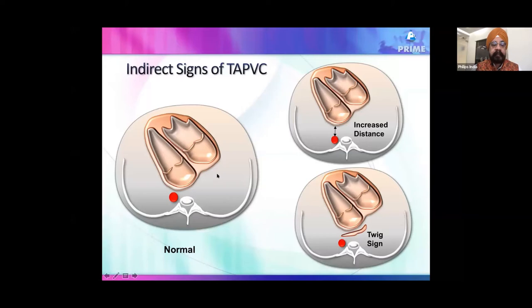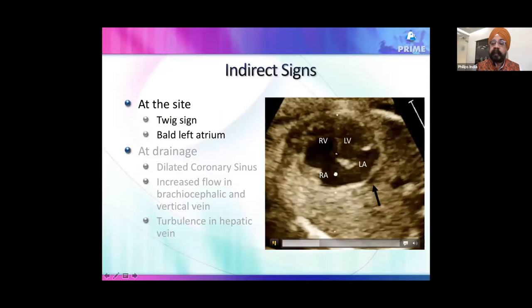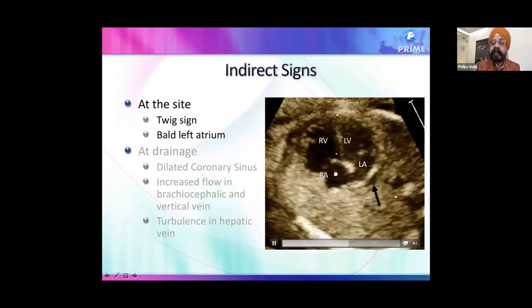Key indirect signs for TAPVD: The distance between the aorta and the posterior wall of the left atrium is increased because pulmonary veins normally anchor the heart posteriorly. If you can place another aorta between the aorta and the LA wall, suspect TAPVD. A 'twig sign' — a twig-like structure seen behind the left atrium — is another indication. If you can place an additional aorta in that space, the distance is enough to raise suspicion.